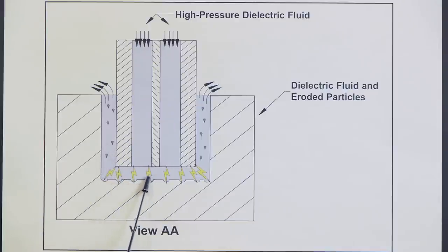There's a servomechanism that always maintains a gap. If this electrode ever touches the workpiece, then there's a short circuit.